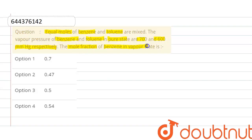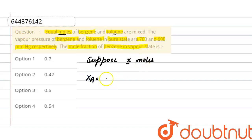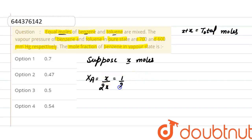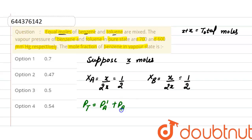Since equal moles of benzene and toluene are mixed, suppose x moles of each are taken. The mole fraction of benzene is x divided by total moles (x + x = 2x), which gives 1/2. Similarly, the mole fraction of toluene is also 1/2.